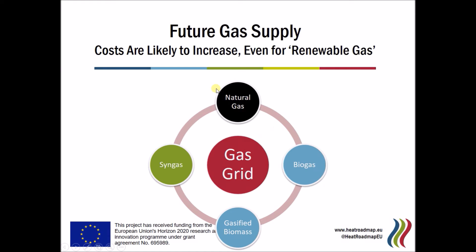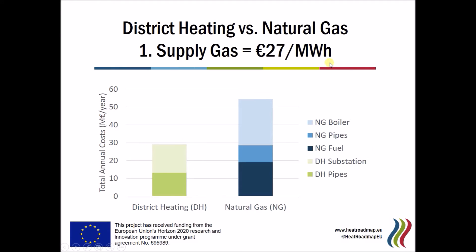That means whether we rely on natural gas or turn to an alternative form of gas, it's very likely that the price of gas will be much more than what we've been used to in the past. Using the number I assumed — around the typical price for the last five years in Europe — this gives the total annual price of supplying natural gas to my hypothetical 50,000 dwellings. As you can see, the supply price is around the same level as the boiler costs. So these are the two biggest components for natural gas, whereas the piping is the smallest of the three key components.